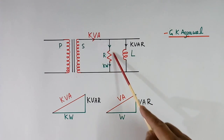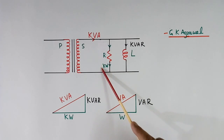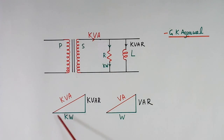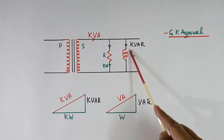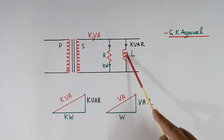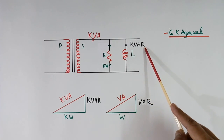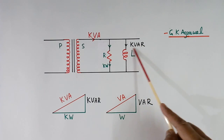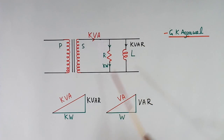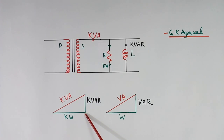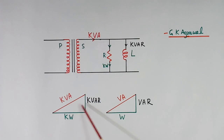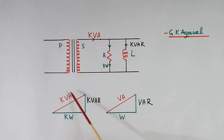Resistive load power is indicated by kW. Inductive load power is indicated by kVAR — this is reactive power, kVAR. And total power is the vector addition of these two, which gives kVA.